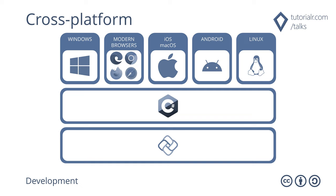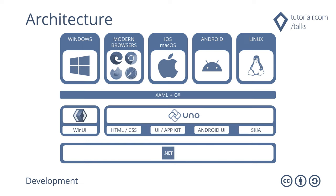Cross-platform development with C Sharp targeting Windows, modern browsers, iOS, macOS, Android, and Linux is possible using Uno Platform. The architecture for Uno Platform supports Windows, modern browsers, iOS, macOS, and Linux with XAML and C Sharp with a single code base.